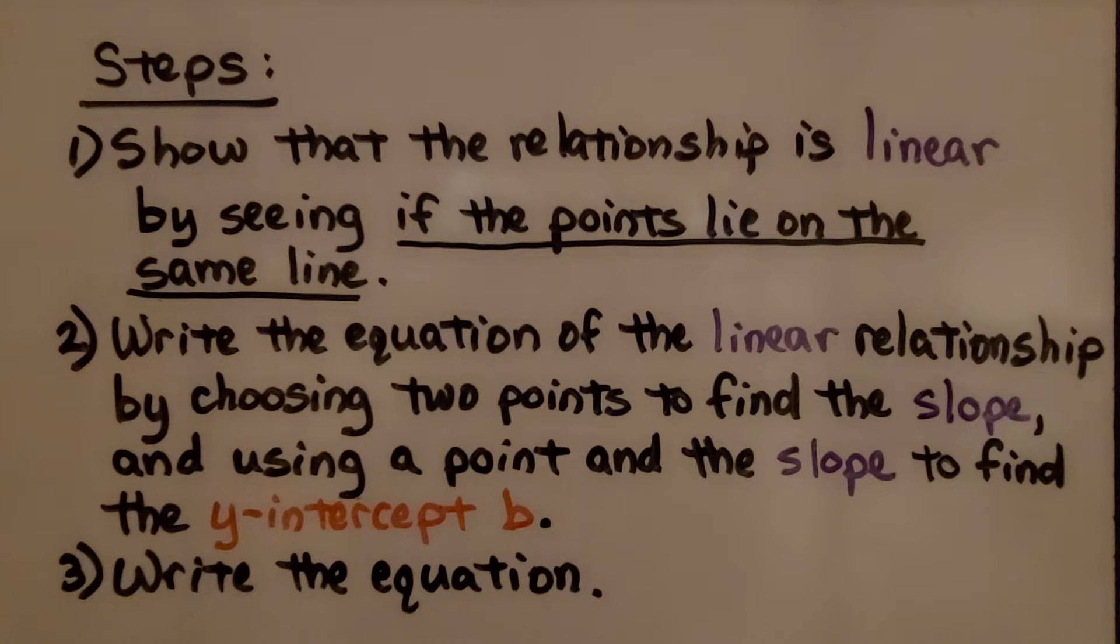We may already have a graph where they are on the same line and we already know it. Second thing we do is write the equation of the linear relationship by choosing two points, two ordered pairs to find the slope, and using a point and the slope to find the y-intercept b. Then we write the equation.